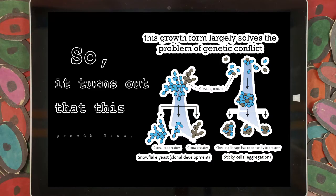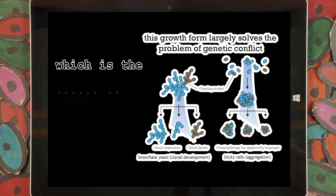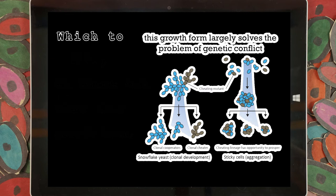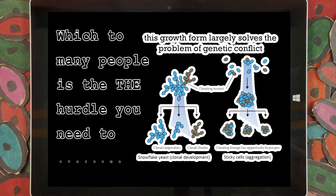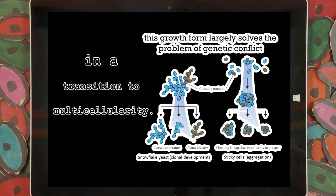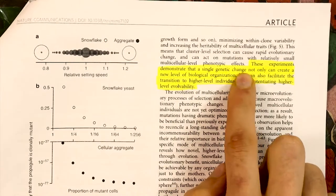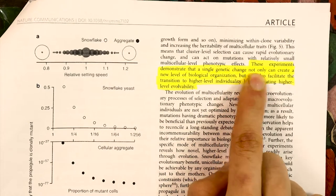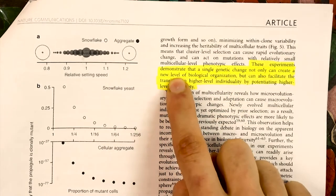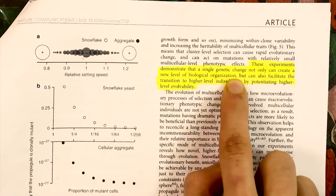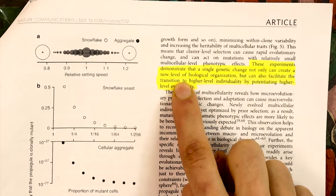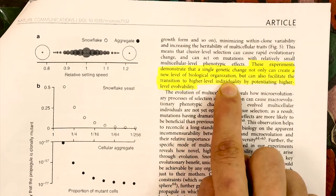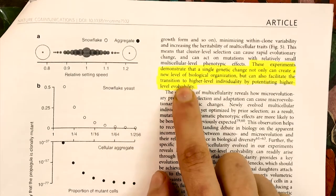The answer to that question lies in the single-celled bottleneck. Not only does the bottleneck reduce genetic conflict by ensuring that all of the cells in the snowflake are clones, it also allows multicellular traits like bigness to be visible to selection, even when they only convey a cluster-level fitness benefit. So it turns out that this growth form, this very simple growth form, which is the result of a single mutation, largely solves the problem of genetic conflict, which to many people is the hurdle you need to overcome in a transition to multicellularity. The paper concludes that these experiments demonstrate that a single genetic change can not only create a new level of biological organization, but can also facilitate the transition to higher-level individuality by potentiating higher-level evolvability.